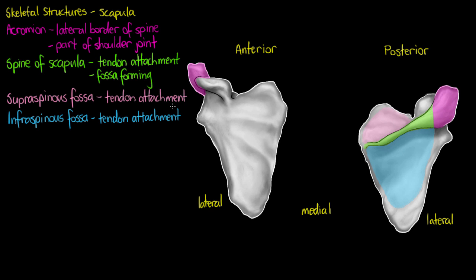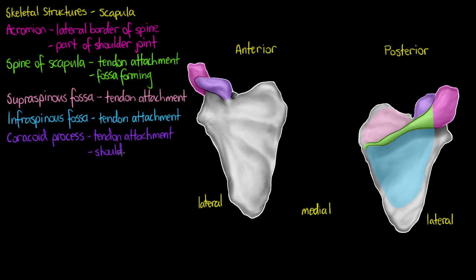Moving on to the next portion of the scapula that also helps form part of the shoulder joint: we have the coracoid process. Both the anterior and posterior portions of the coracoid process are highlighted on the scapula. There is some tendon attachment here, and it also helps stabilize the shoulder joint along with the acromion.